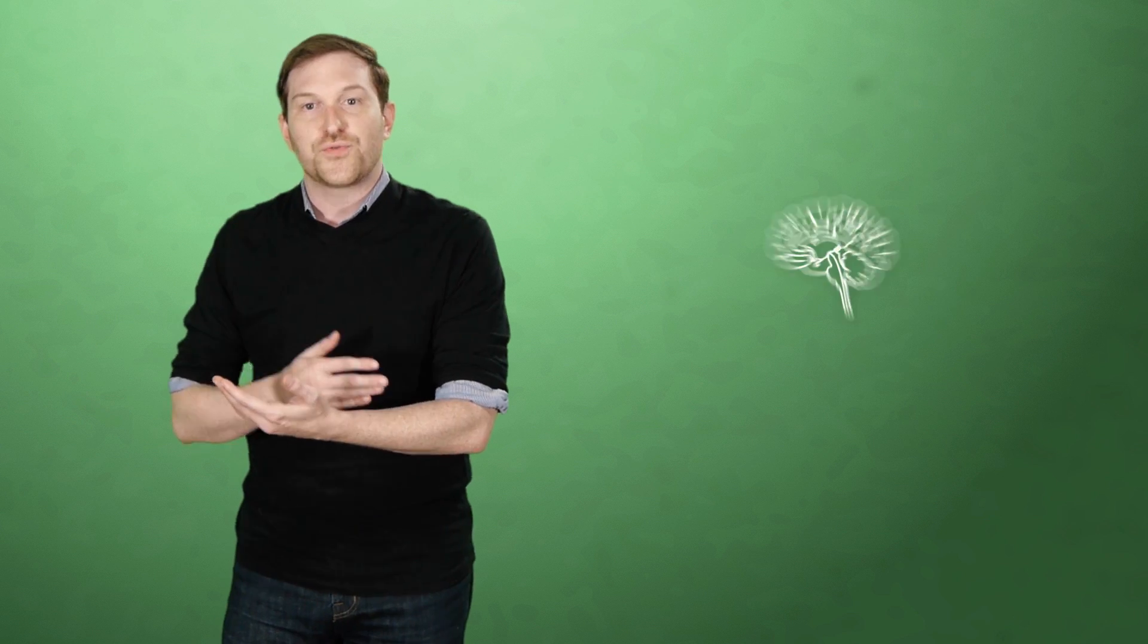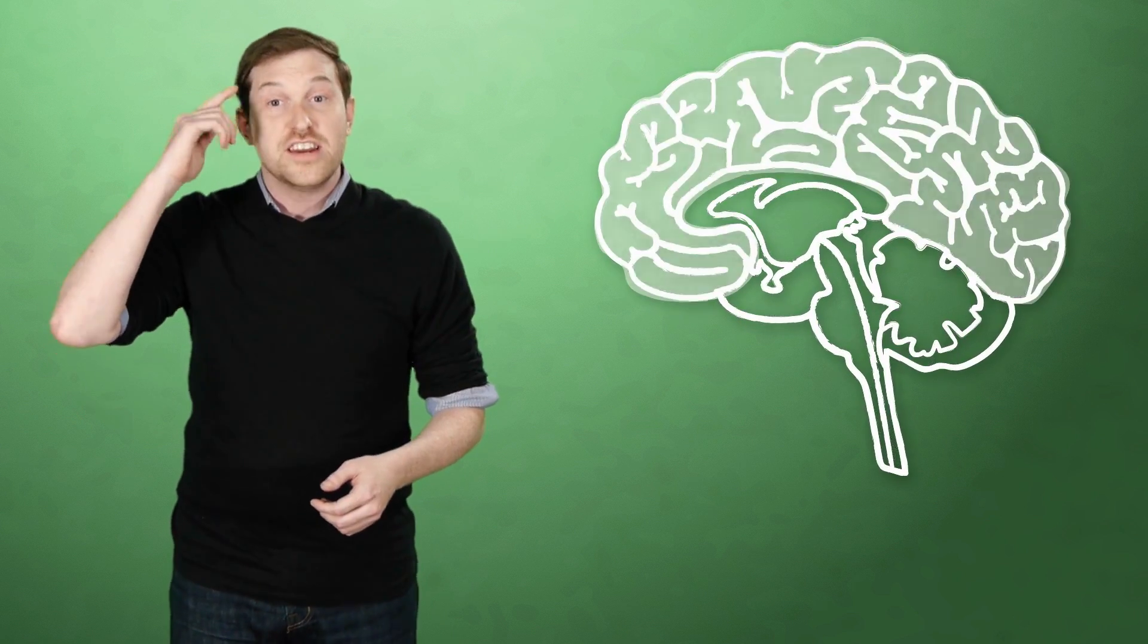Dunbar found a correlation between the size of a primate's brain and the size of its average social group. He extrapolated the results for the average human brain size, specifically the neocortex. And what number did he get?